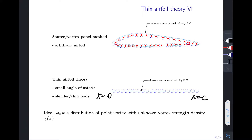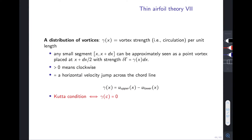We construct the potential flow with a distribution of point vortices with unknown vortex strength density called gamma(x). So gamma(x) is something we don't know but want to find. Gamma(x) is the vortex strength — basically circulation per unit length. Any small segment from x to x+dx can be approximated as a point vortex placed at the center of that segment with vortex strength gamma(x)·dx.